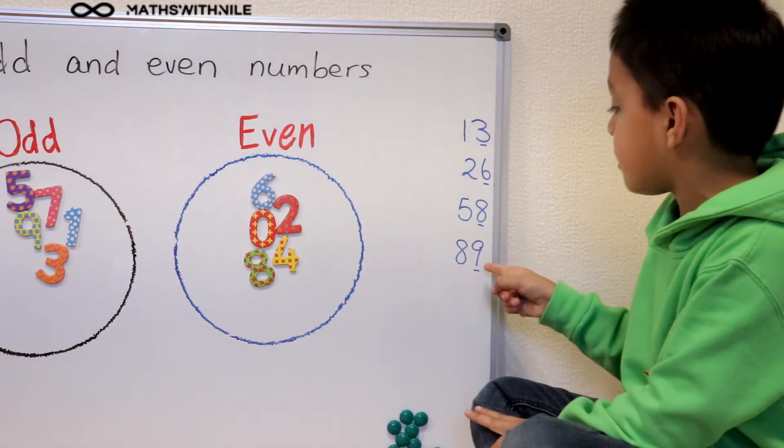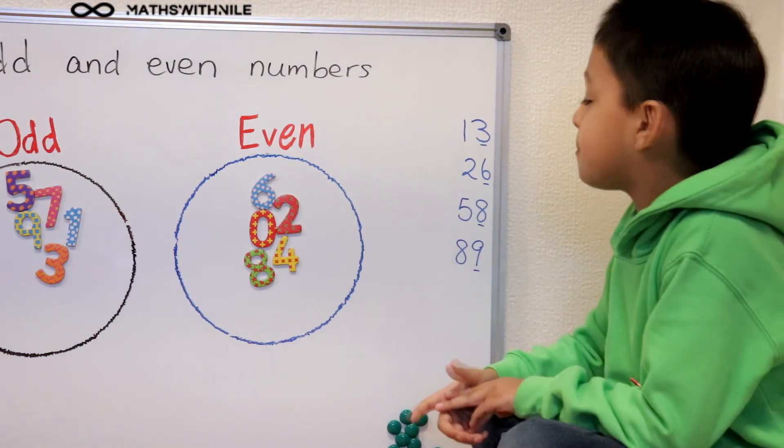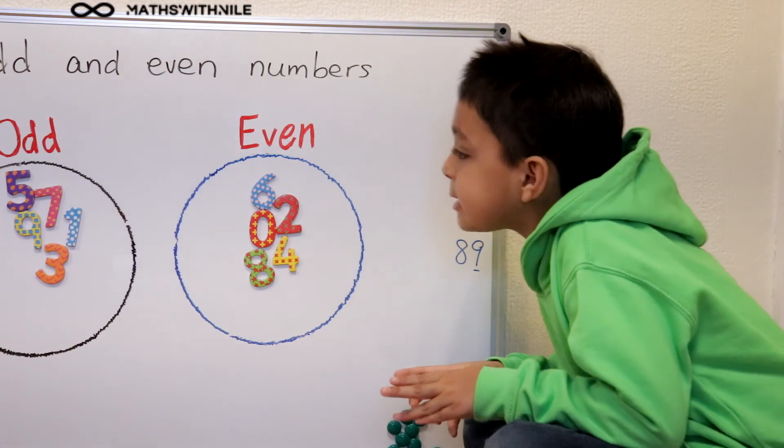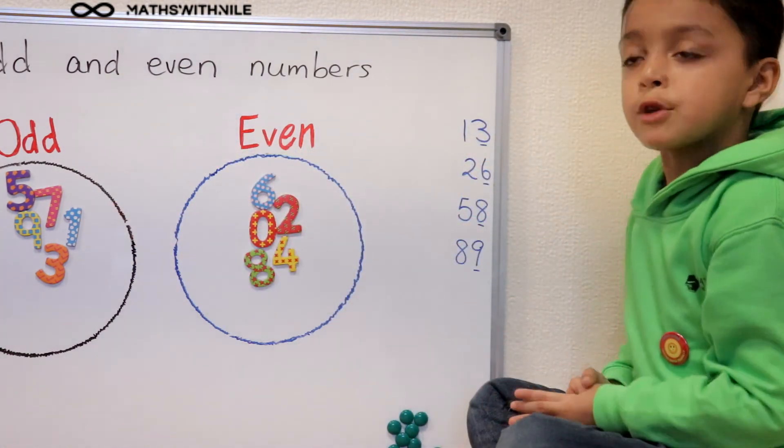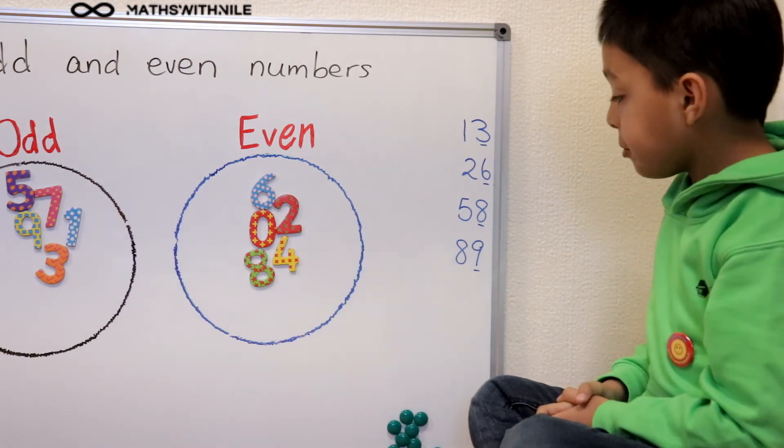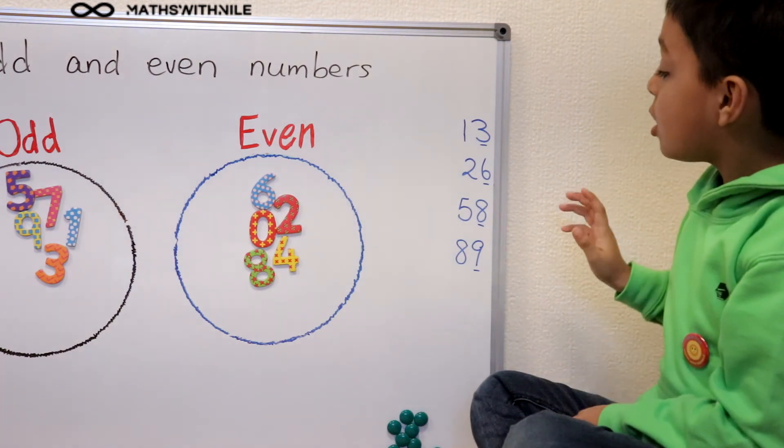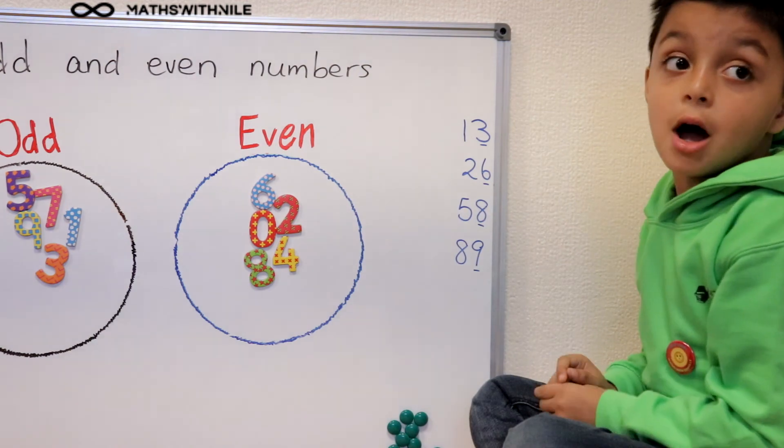And then 89, hmm, where's number nine? Okay, so there's number nine in the odd group, so that means that's an odd number. Bye.